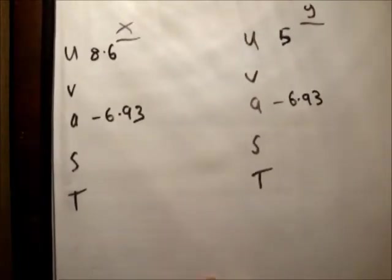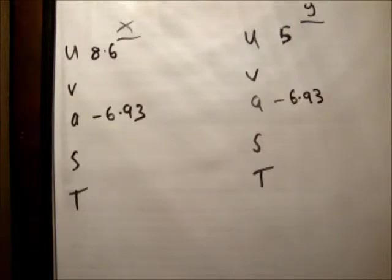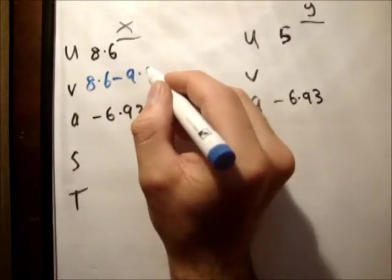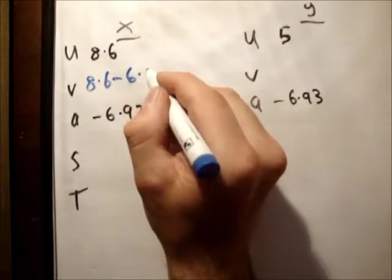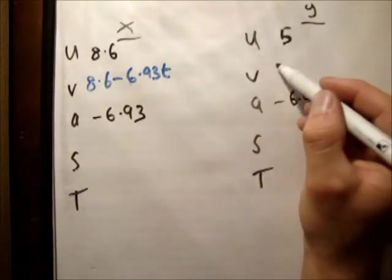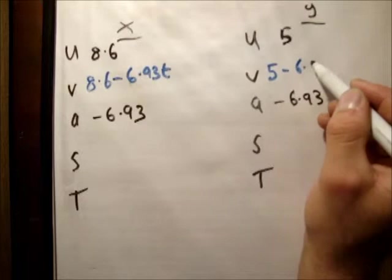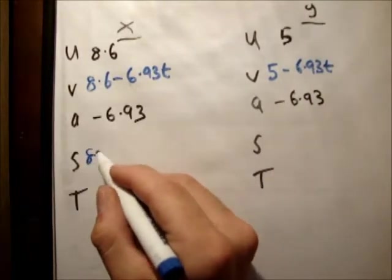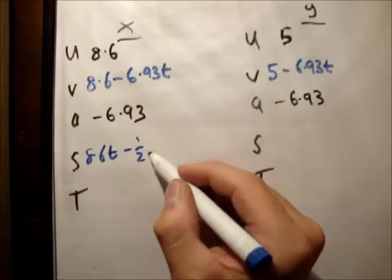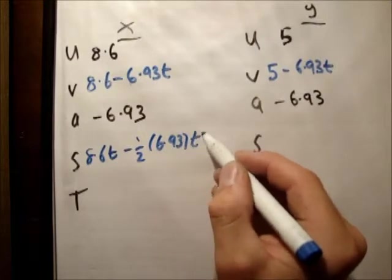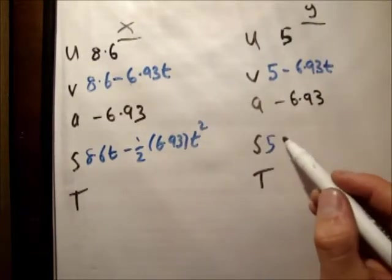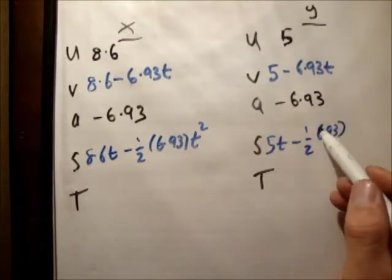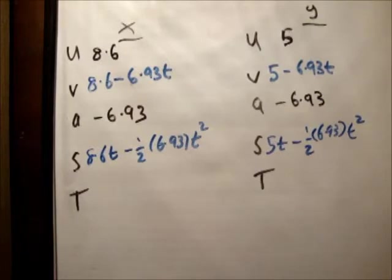So we need to finish off this. And we'll do it very quickly. We know that V is equal to U plus AT. So it's equal to 8.6 minus 6.93 T. And it's equal to 5 minus 6.93 T. This is equal to UT plus 1 half AT squared. So 8.6 T minus 1 half 6.93 T squared. And 5T minus 1 half 6.93 T squared.